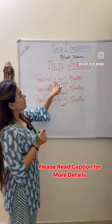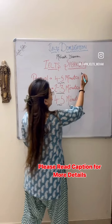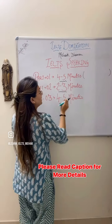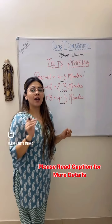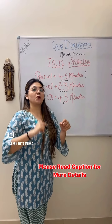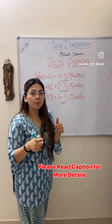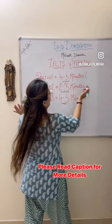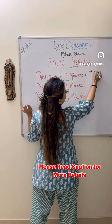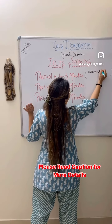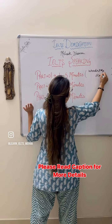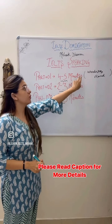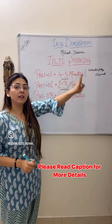Part 1 will have questions related to you — each and every question will have the word 'you' in it. For example: what is your name, what are your hobbies, what are your likes and dislikes. Part 1 is the introductory round, so make sure that you are spontaneous, prompt, and very clear.